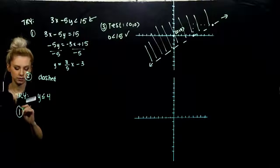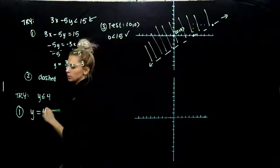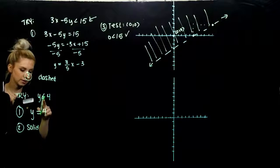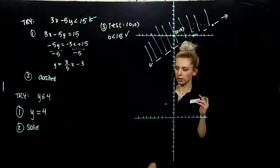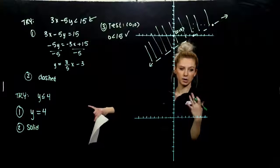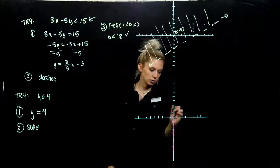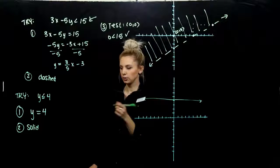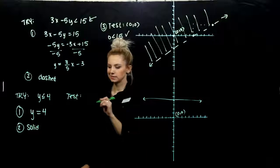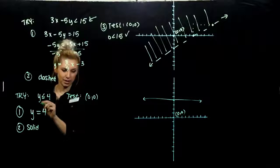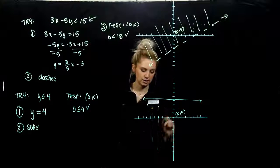For the last practice problem, exchange the inequality for equality. Before drawing, is the line solid or dashed? It's going to be solid — we can include the boundary. What kind of line is it? Only the y variable is involved, so we need a y-intercept, which means it's a horizontal line at y equals 4. Draw a solid horizontal line at 4. For the test point, I like the origin (0, 0). We only need the y-coordinate: is 0 less than or equal to 4? Yes. So shade the lower half plane.